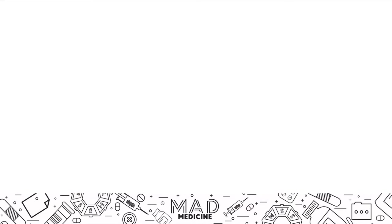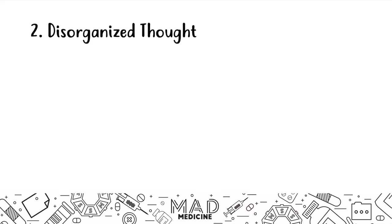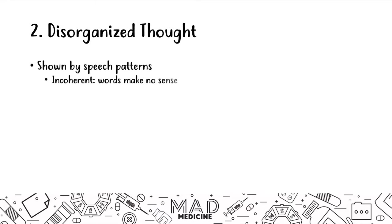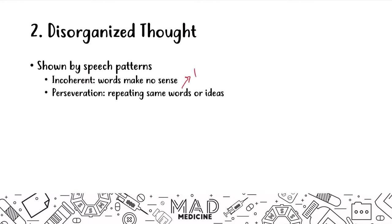Let's talk about disorganized thought. Disorganized thought is usually seen in speech patterns in which a patient may have incoherent speech with words that make no sense — they might just jumble random words together. They may also be perseverative, where they repeat the same word or idea over and over again. This is also going to be something like disorganized thinking overall.